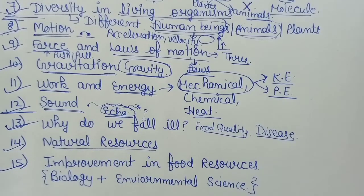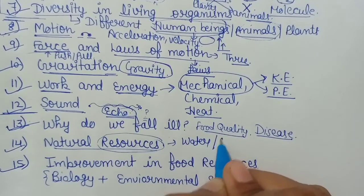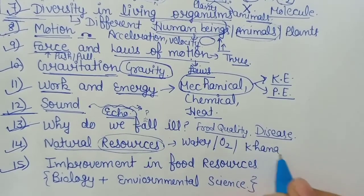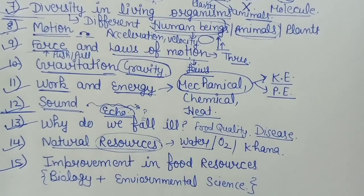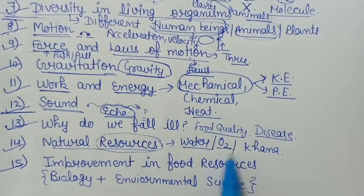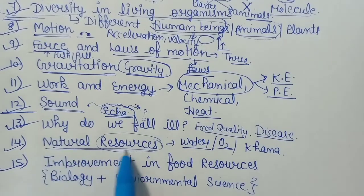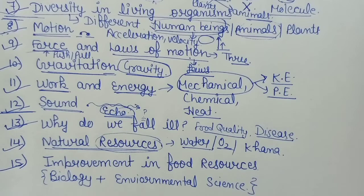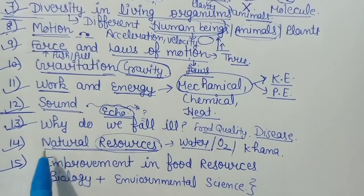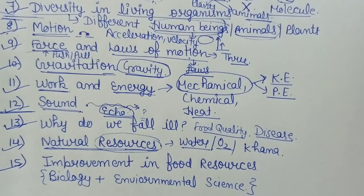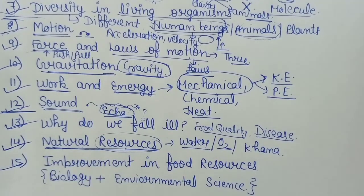Then we will move to chapter number 14 — Natural Resources. हमें पता है हमारी life resources पर depend कर रही है — हमें जीने के लिए पानी चाहिए, हवा चाहिए, oxygen चाहिए, खाना चाहिए। यह हमें मिल कहां से रहा है — हमारी earth पर पानी, oxygen सब available है। लेकिन हमारी human activities धीरे-धीरे natural resources को खत्म करती जा रही है — greenhouse effect होता है, water polluted होता जा रहा है, air polluted होती जा रही है। तो natural resources क्या हैं और हम उन्हें कैसे affect कर रहे हैं — यह chapter number 14 में।